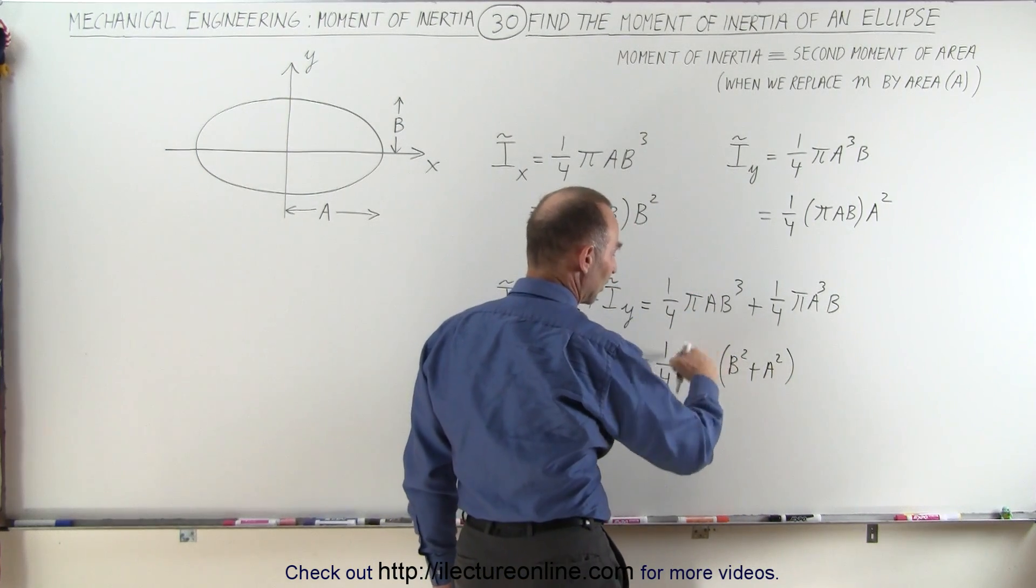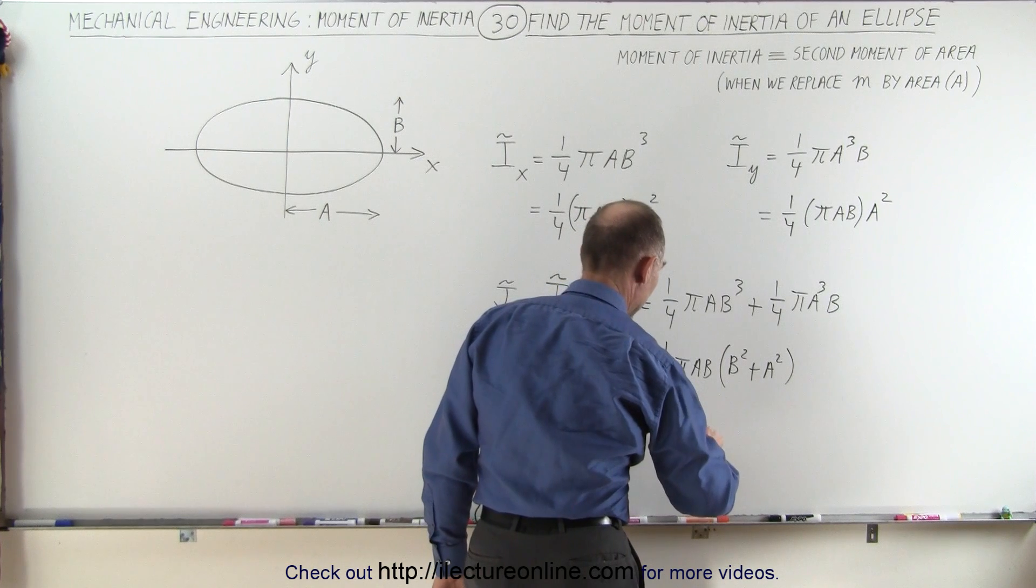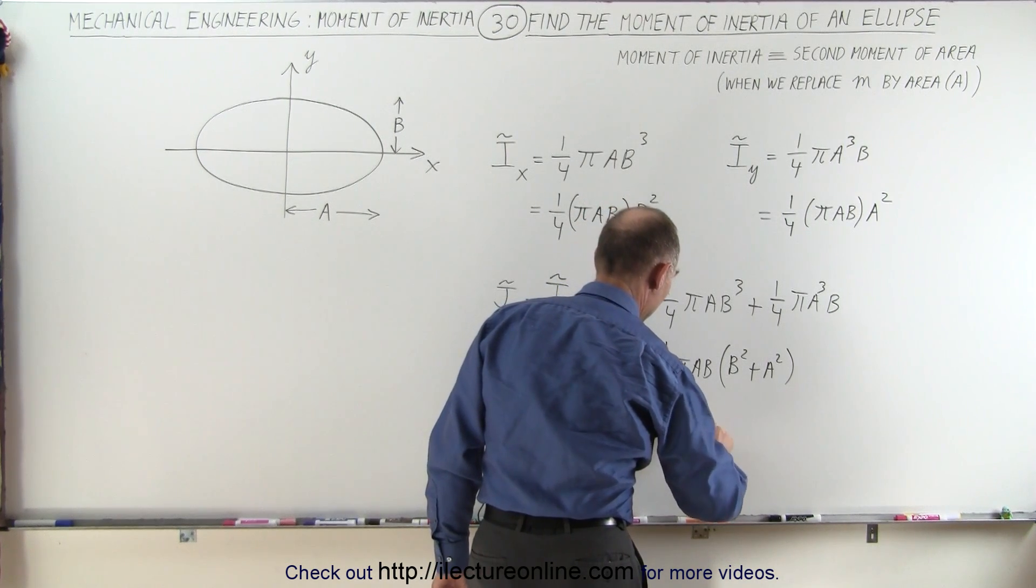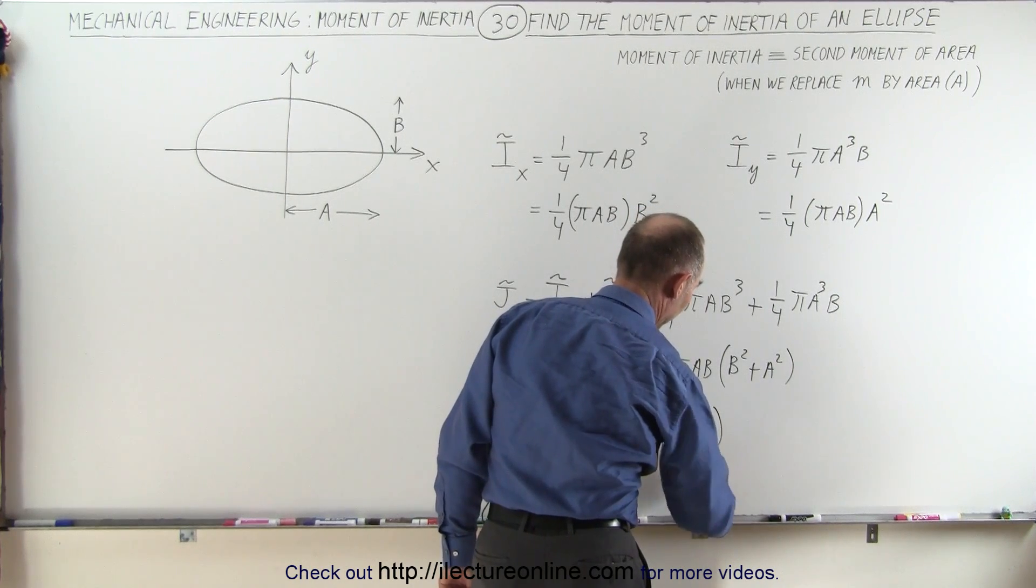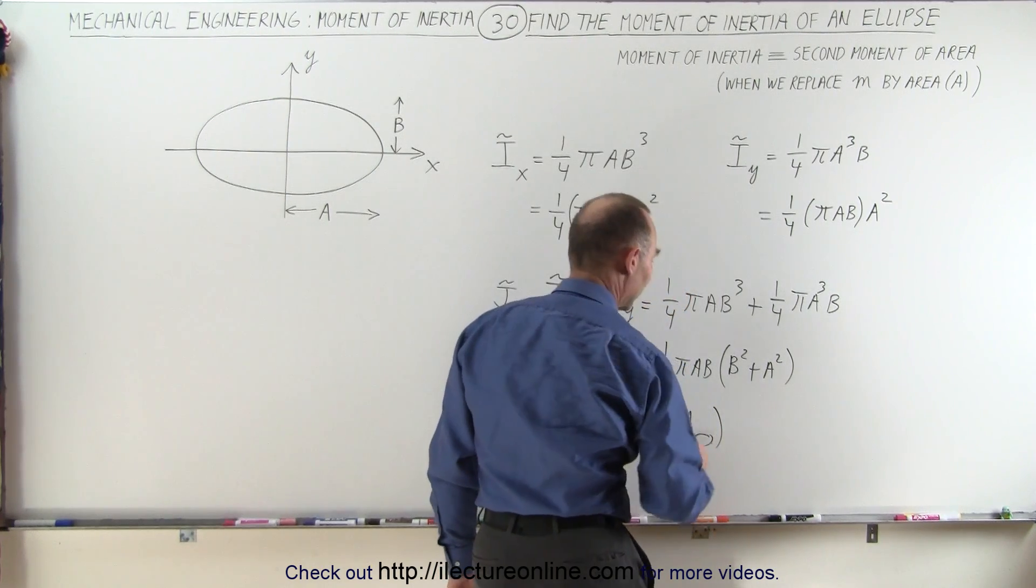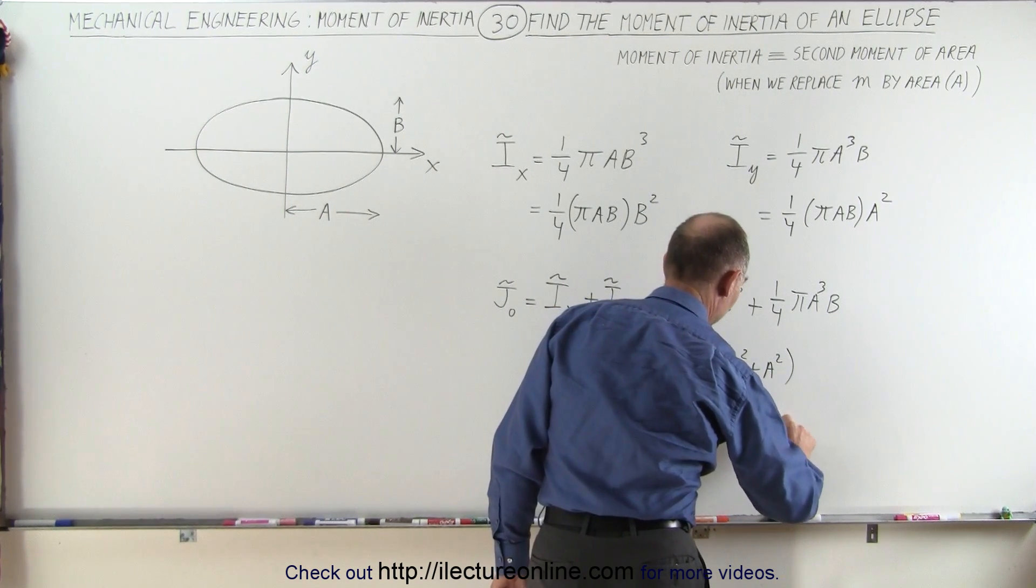And realizing that this is the area of an ellipse, this is equal to one-quarter the area of an ellipse—or maybe I'll just put the symbol down, area of the ellipse like this—times, and we'll reverse order, a squared plus b squared.